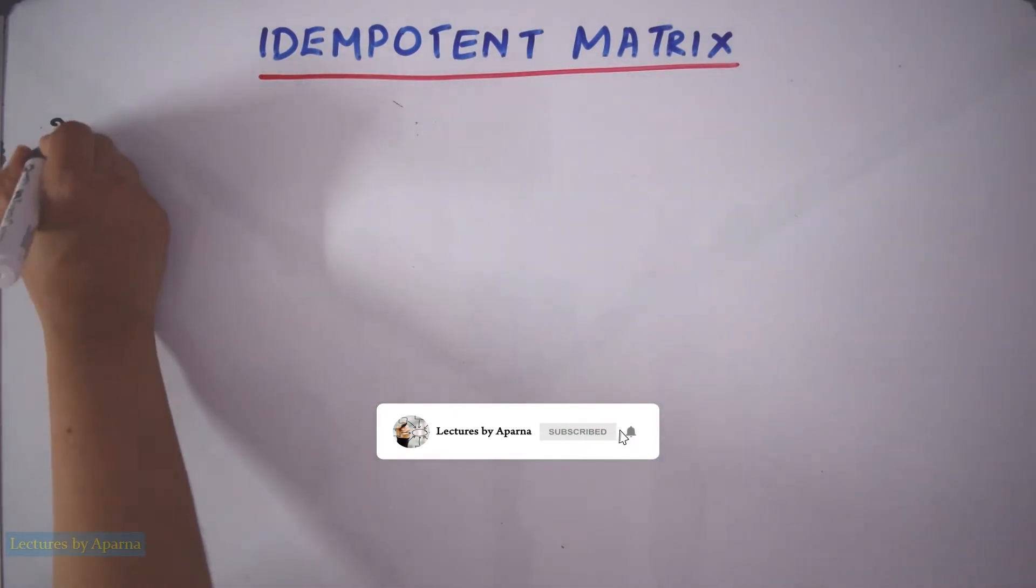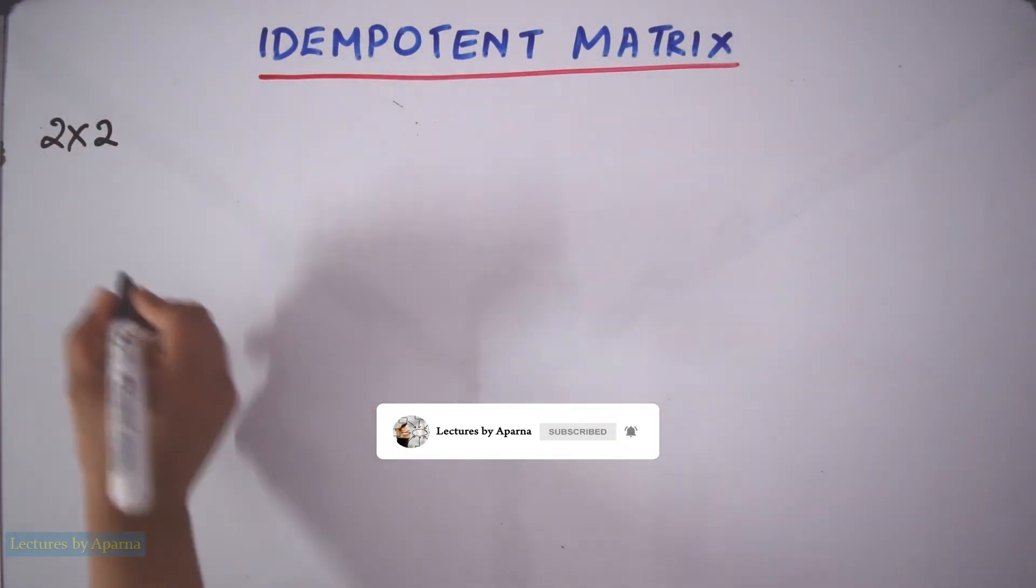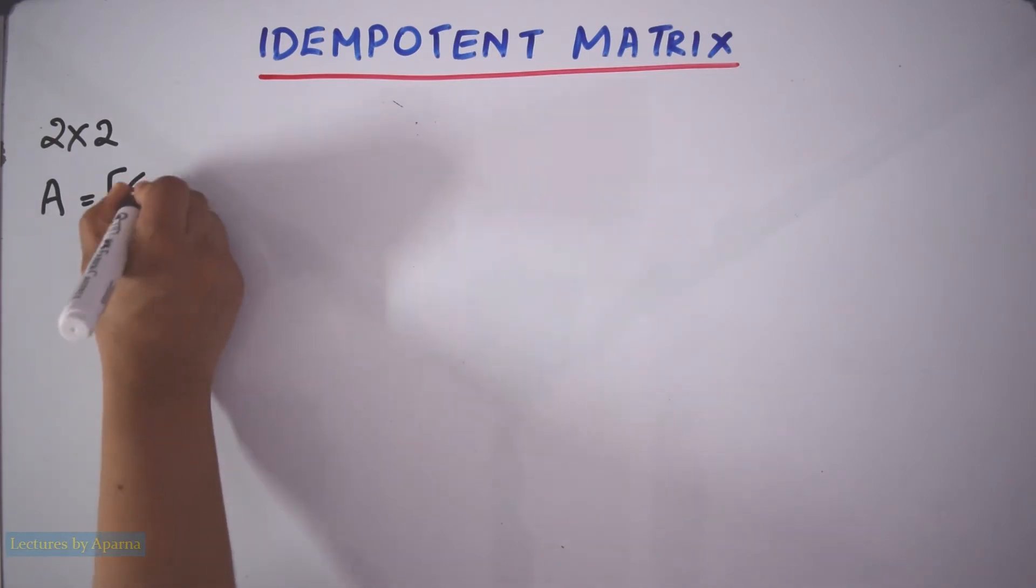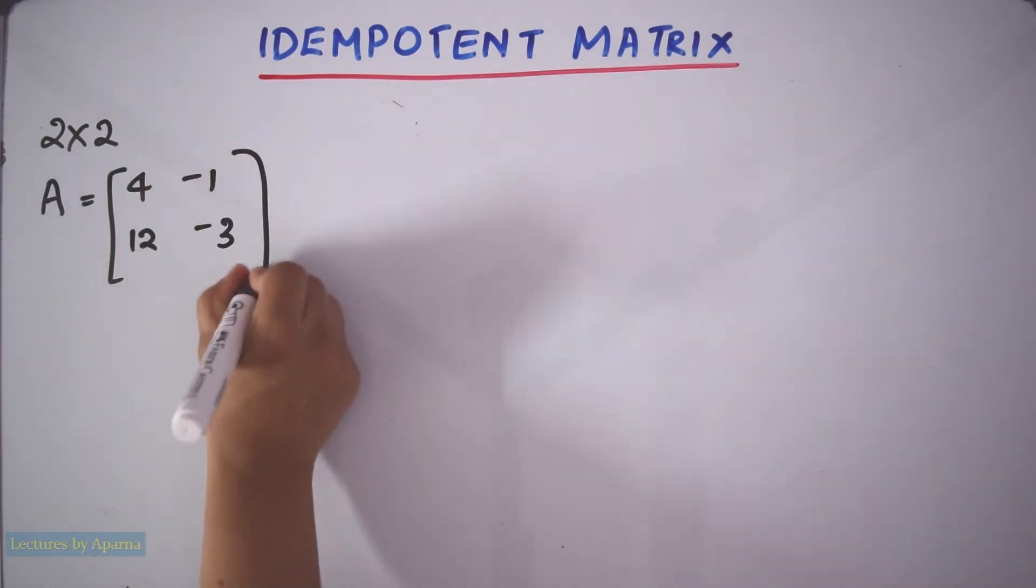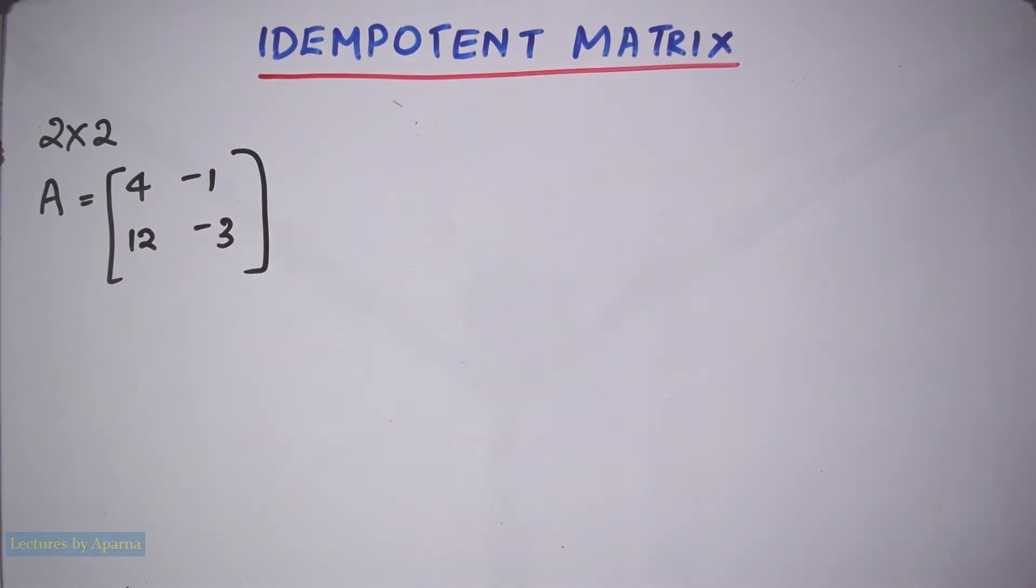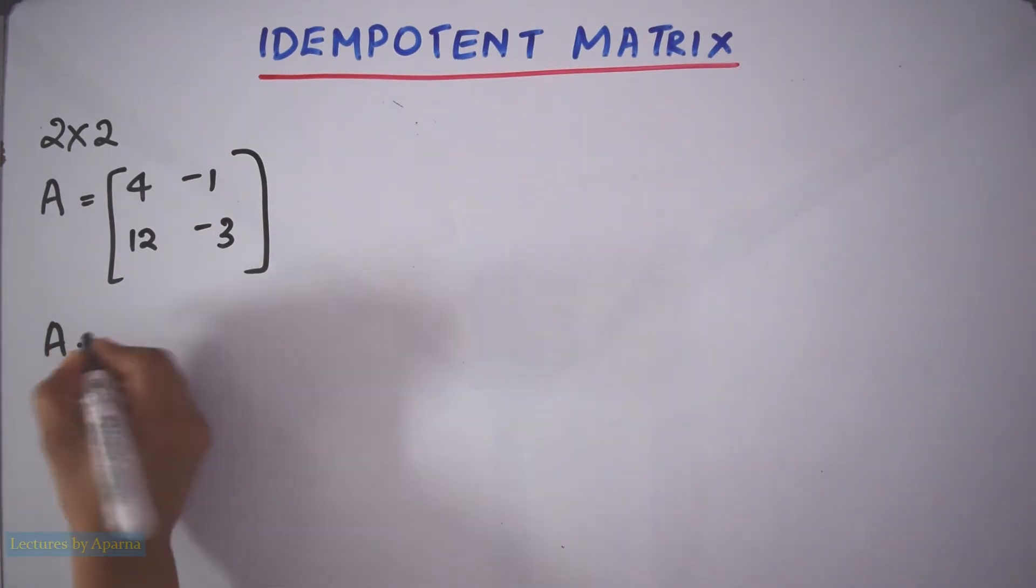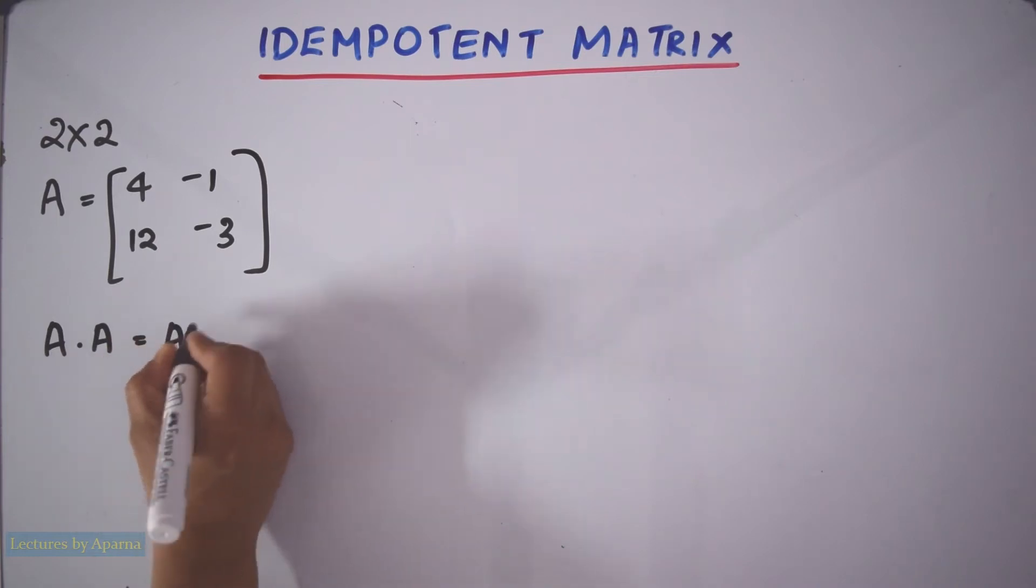Consider a 2 by 2 matrix A. A is equal to 4 minus 1, 12 minus 3. Now we have to find A into A. That is equal to A square.